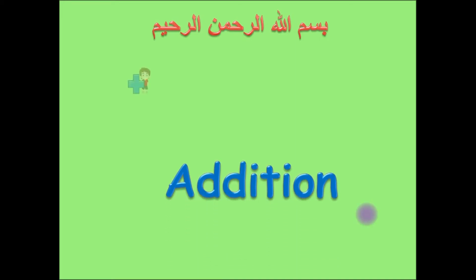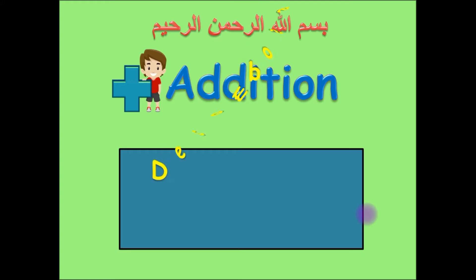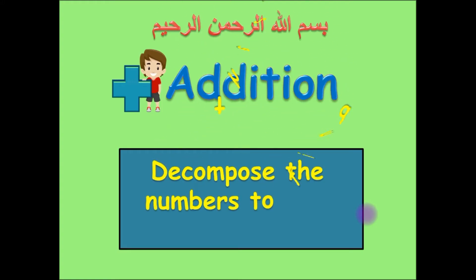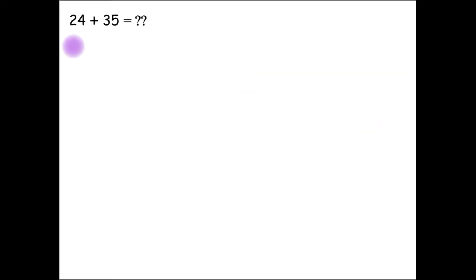How can we add by decomposing the numbers to find the sum? The first example: 24 plus 35.